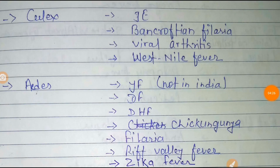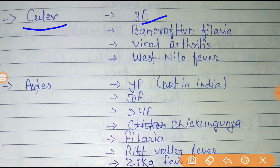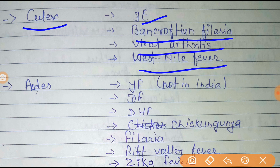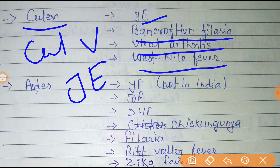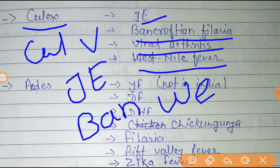Next is the Culex mosquito. Culex transmits Japanese encephalitis, Wuchereria bancrofti (filaria), viral arthritis, and West Nile fever. You can remember it by the trick: 'Call Big One West' — standing for Culex, Bancrofti, West Nile.